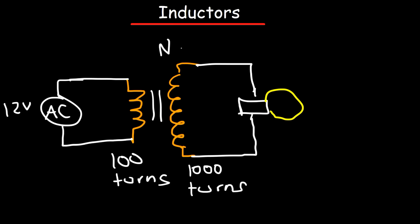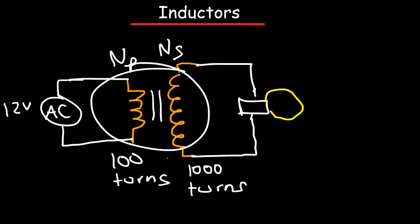Because the secondary side has more coils than the primary side, the voltage will increase. This is going to be a step-up transformer. By the way, this is the circuit diagram for a transformer.